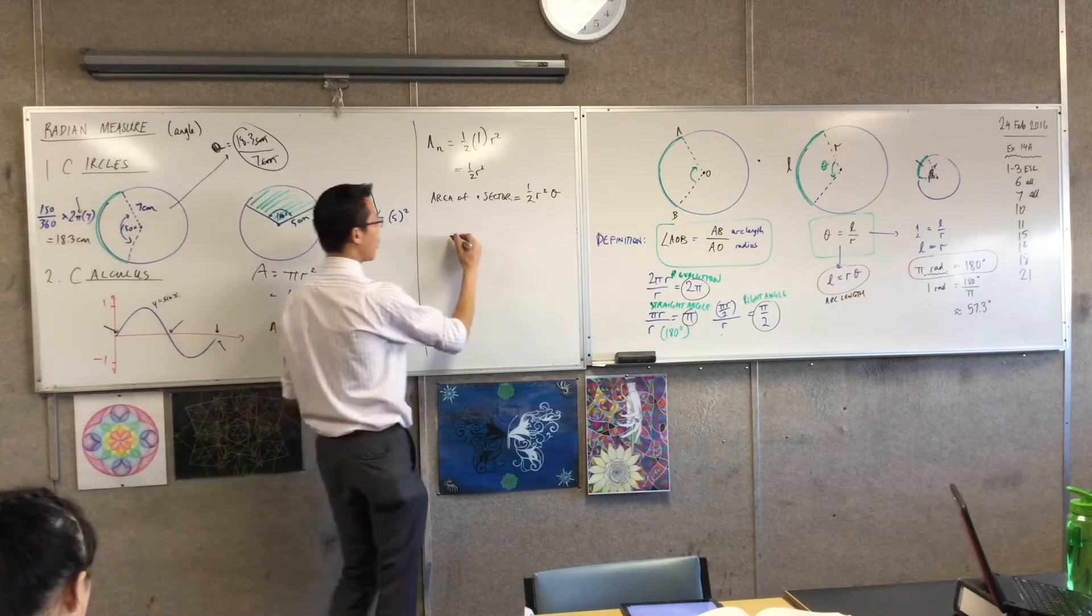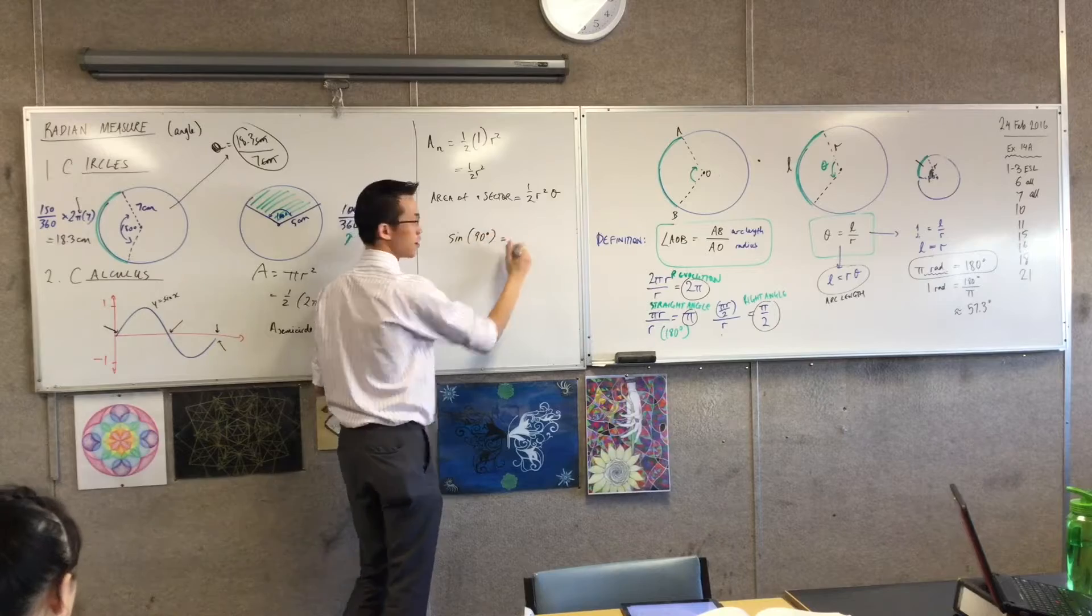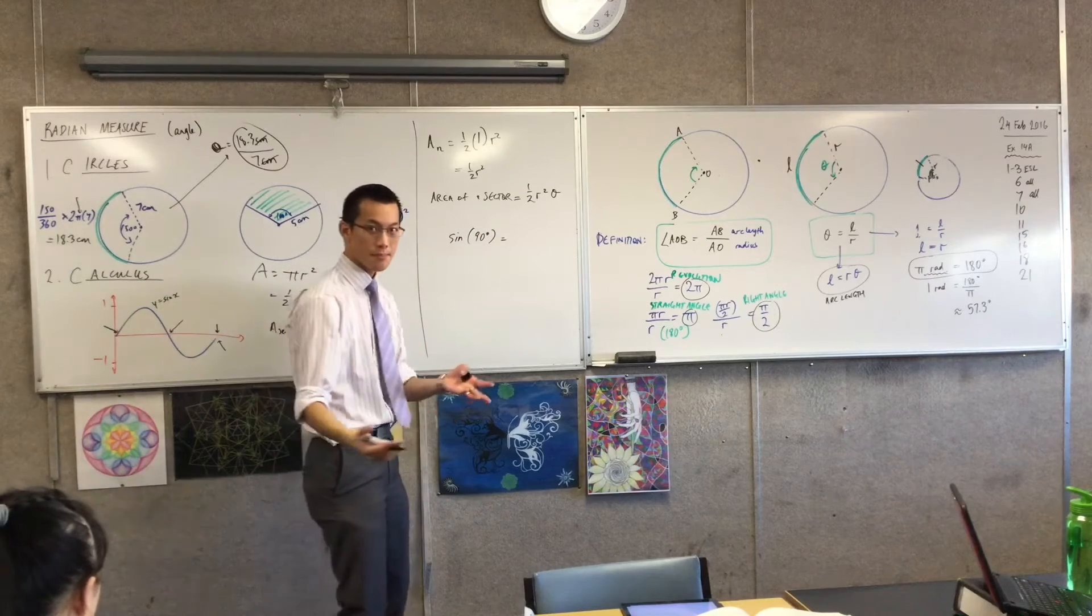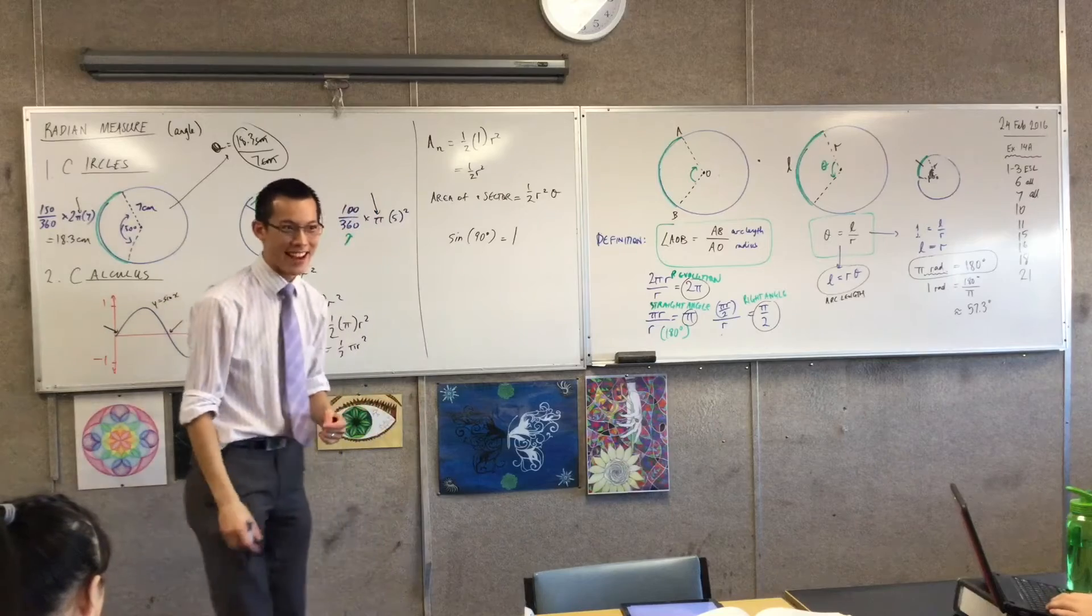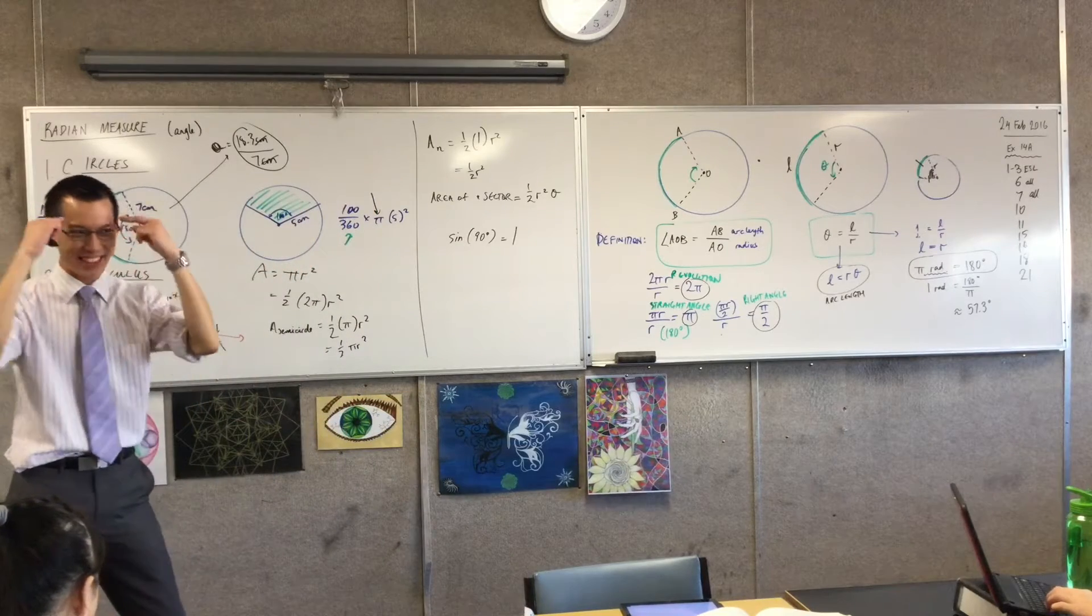So for instance, we know by now what sine of 90 degrees is. Sine of 90, of course, is? Is 1. Sine of 90 degrees is 1. Answer the question, not the thing in your head.